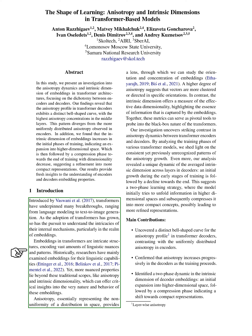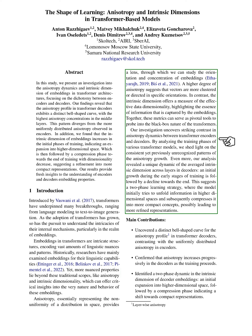Anisotropy is basically a measure of how evenly a distribution is spread out in space. It allows us to study the orientation and concentration of embeddings. A higher degree of anisotropy means that vectors are more clustered or directed in specific orientations. On the other hand, the intrinsic dimension gives us a measure of the effective data dimensionality, showing us the essence of information captured by the embeddings.